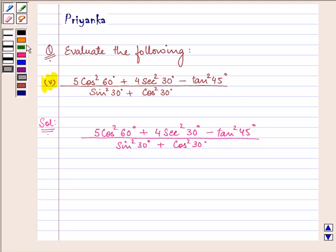Now before proceeding we should be well versed with the values of cos 60 degree, secant 30 degree, tan 45 degree, sin 30 degrees and cos 30 degrees.